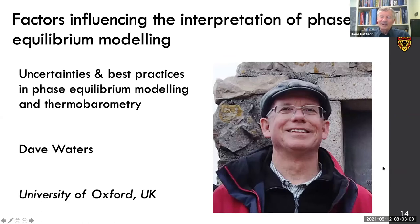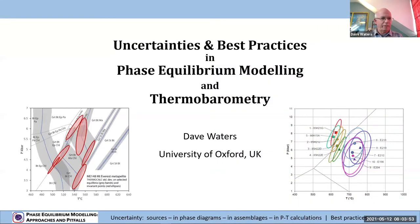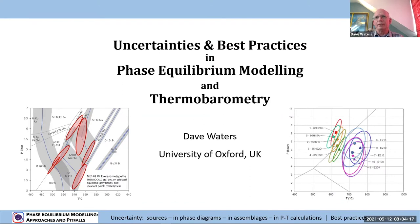I'm going to talk about uncertainties and best practices in phase equilibrium modeling and thermobarometry. The outline includes sources of uncertainty, their relevance to phase diagrams, uncertainty in assemblages, uncertainty in PT calculations — which will bring in the average PT method — and the last section will be a relatively quick run through best practices.